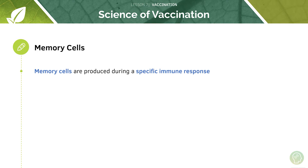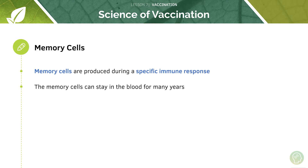These B lymphocytes, these B cells, produce memory cells which then remain circulating in the blood for many many years. These memory cells have memory to a particular type of pathogen encountered by the body in the past. So if that same pathogen infects again with the same antigen, the memory cells can quickly produce antibodies.